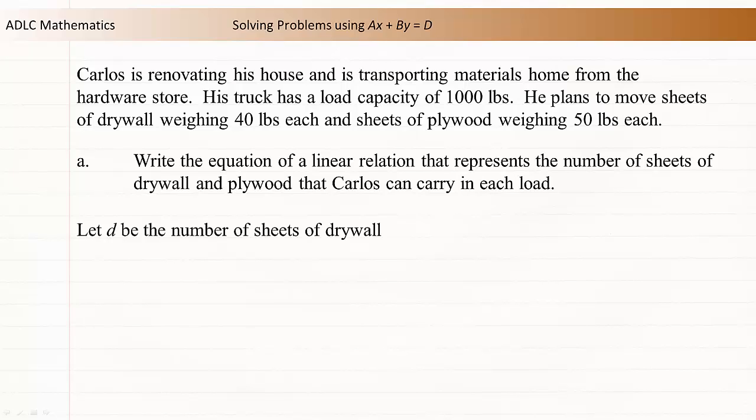Let d be the number of sheets of drywall and let p be the number of sheets of plywood. Defining the variables like this makes it very clear to the reader what each variable represents. We know that each sheet of drywall weighs 40 pounds, and we have d sheets of drywall, so the total weight of the drywall can be represented as 40d.